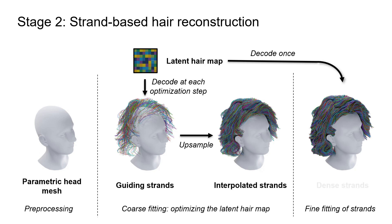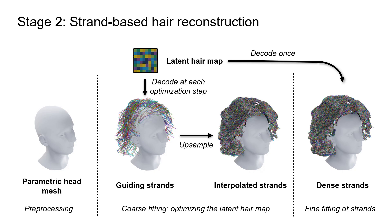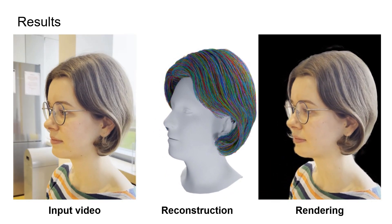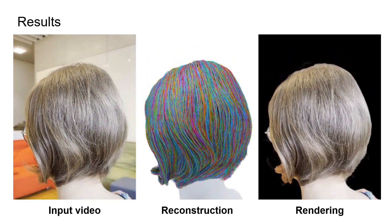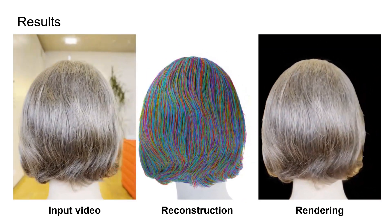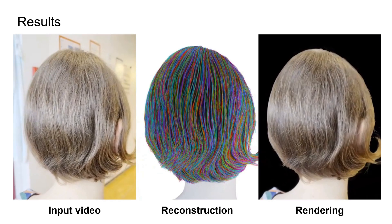After the coarse stage, we decode the dense hairstyle from the latent map and directly optimize it with respect to the hair strand parameters. During both of these stages, the training proceeds by converting the strand-based hairstyle into strand-aligned Gaussians to achieve differentiable rendering. As a result, we produce highly accurate strand-based hair reconstructions that can also be realistically rendered using strand-aligned 3D Gaussians.